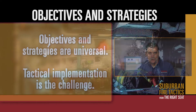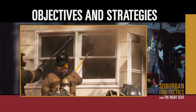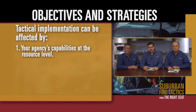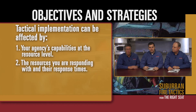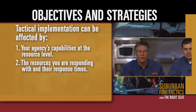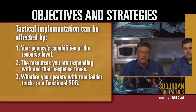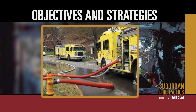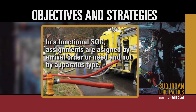Unfortunately, all fire service agencies are not created equal. So, what's the difference? Understanding the difference begins by assessing your agency's capabilities at the single resource level — the company. Secondly, what resources are you responding with? What is the availability of engine companies? And what are the response times, particularly of the later arriving companies? Are there true truck or ladder companies available, or do you operate on a functional SOG? In a functional SOG, assignments are assigned by arrival order or need, and not assigned by the apparatus type. For example, a third arriving engine might be assigned initial truck duty, or a first-due quint with a 75-foot aerial ladder might be assigned engine work.